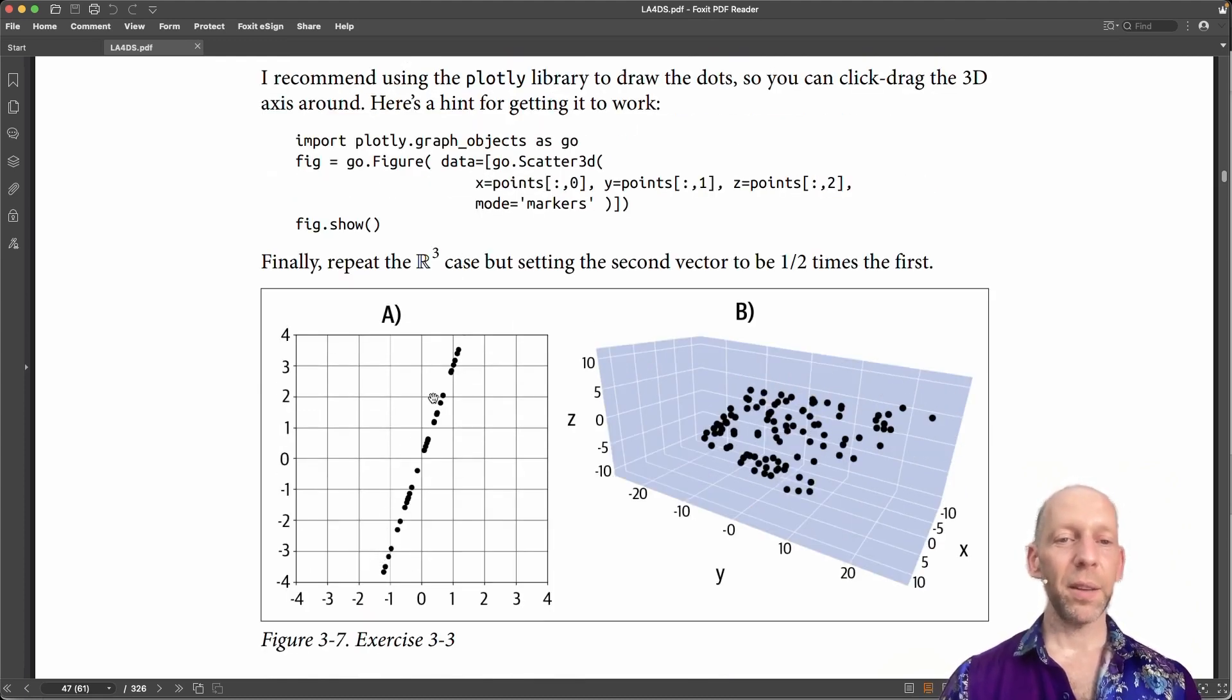That line is all points on a subspace that is defined by the basis vector 1, 3, which would be this vector going up here. You can imagine that there is an infinite number of these points. It goes from infinity down this way to infinity up this way. And that is the subspace.